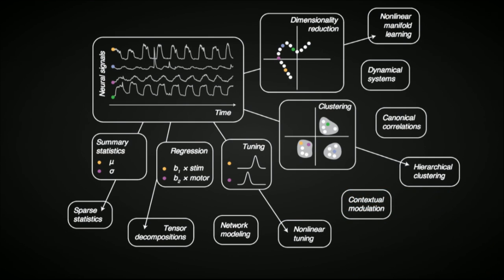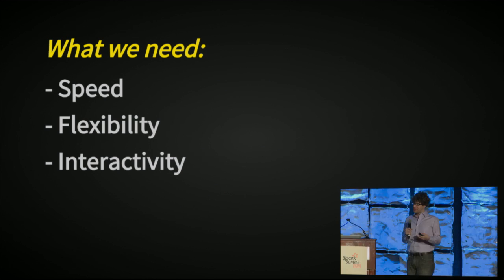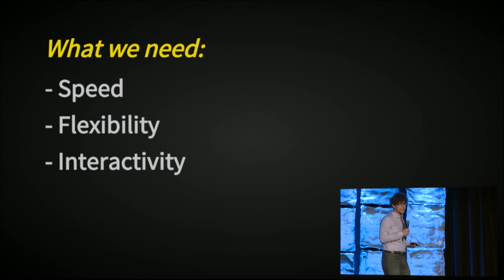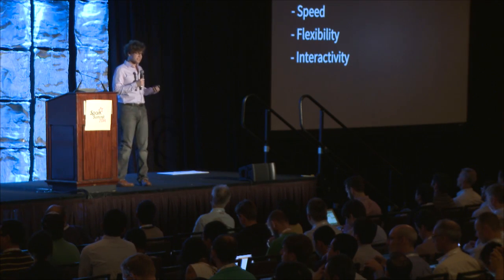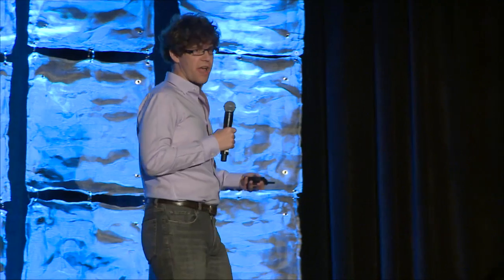All right, so these are really our two challenges that our neural data is getting large, and it's complicated. And in thinking about a sort of platform for doing analytics on these data, there's really kind of three main things that we need. One, of course, is speed, because we want to process these data quickly. We need flexibility, because we're constantly developing all these new algorithms. And we need interactivity, because we never know ahead of time what the right analysis is going to be, so we have to kind of figure it out by playing with the data.